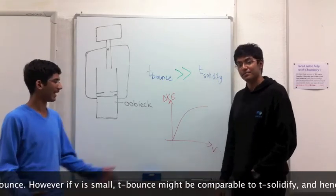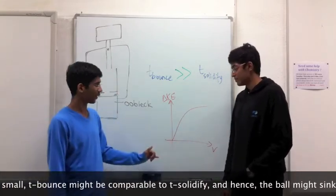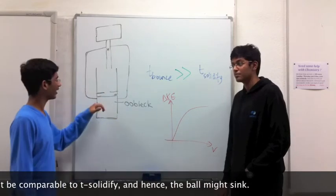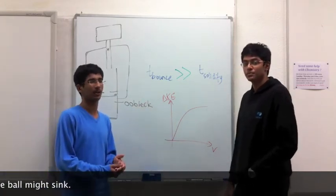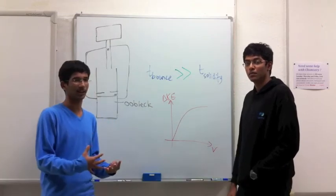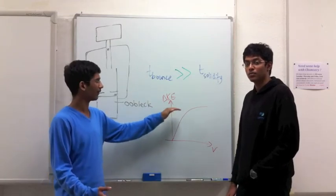And so what we expect to happen is that as we change our independent variable, as the impact velocity increases, we expect that the kinetic energy imparted to the OOBLEC would increase. But we also expect that there would be a critical point where it's no longer able to take in any more kinetic energy, and so we expect that the graph would flatten out.